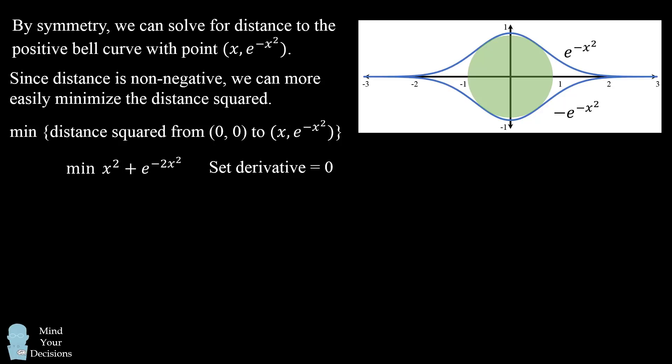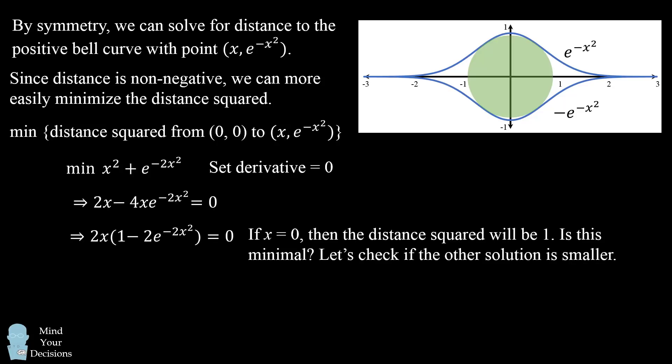We'll take the derivative and set it equal to zero to solve for the critical values. We end up with the following equation, which we can factor out 2x, and now we want to solve for when this equation is equal to zero. So we have two possibilities. One is that 2x will be equal to zero, which means x is equal to zero. In that case, we can check that the distance squared will be one.